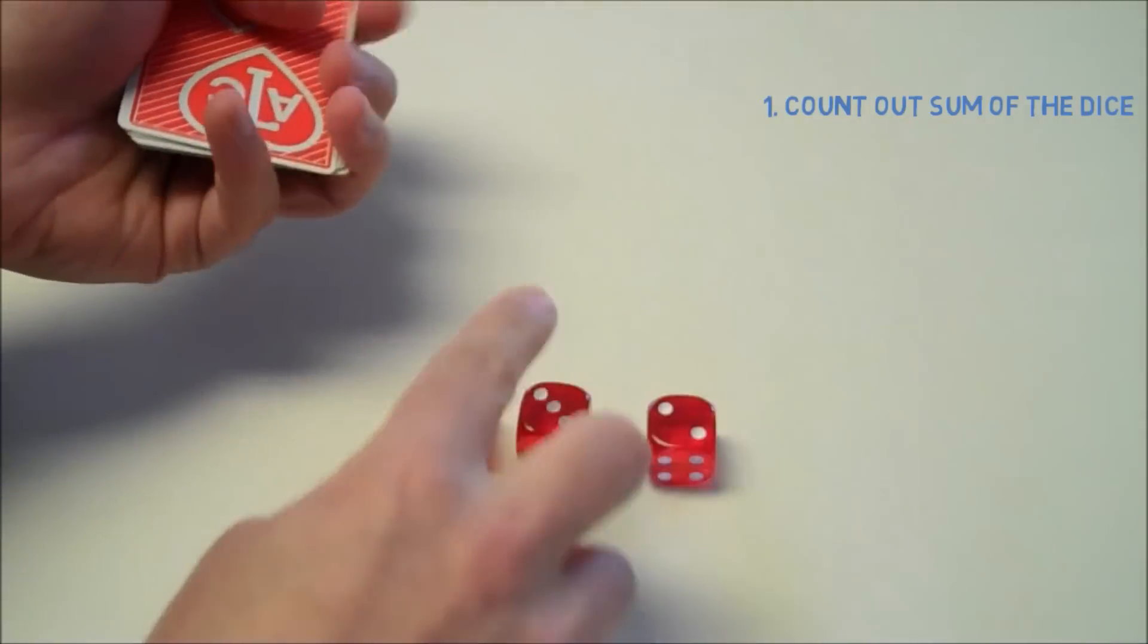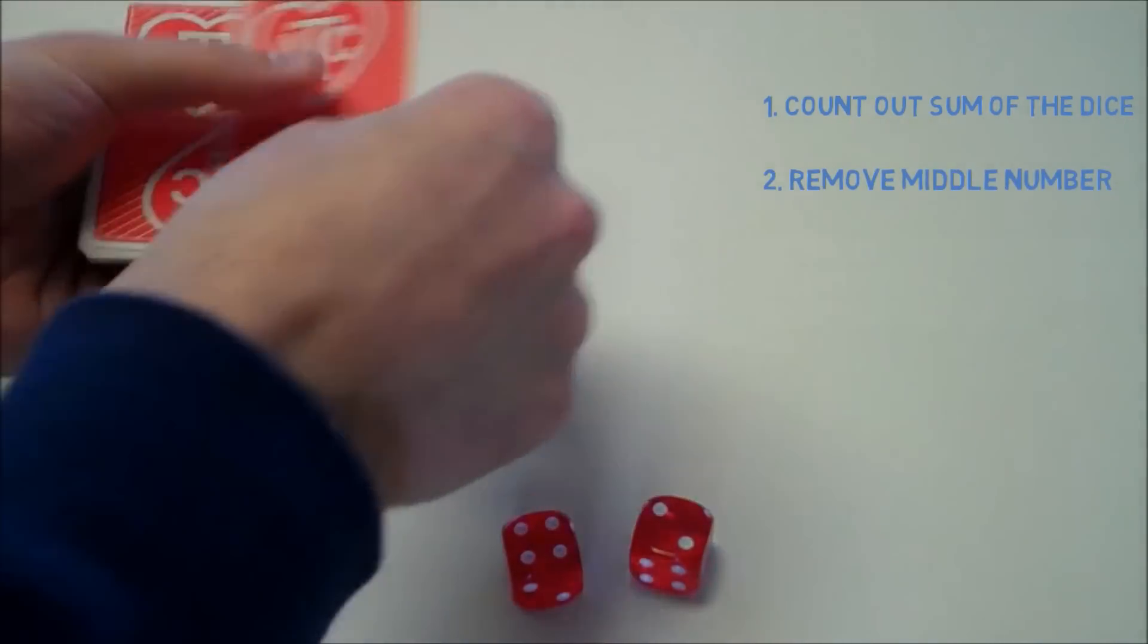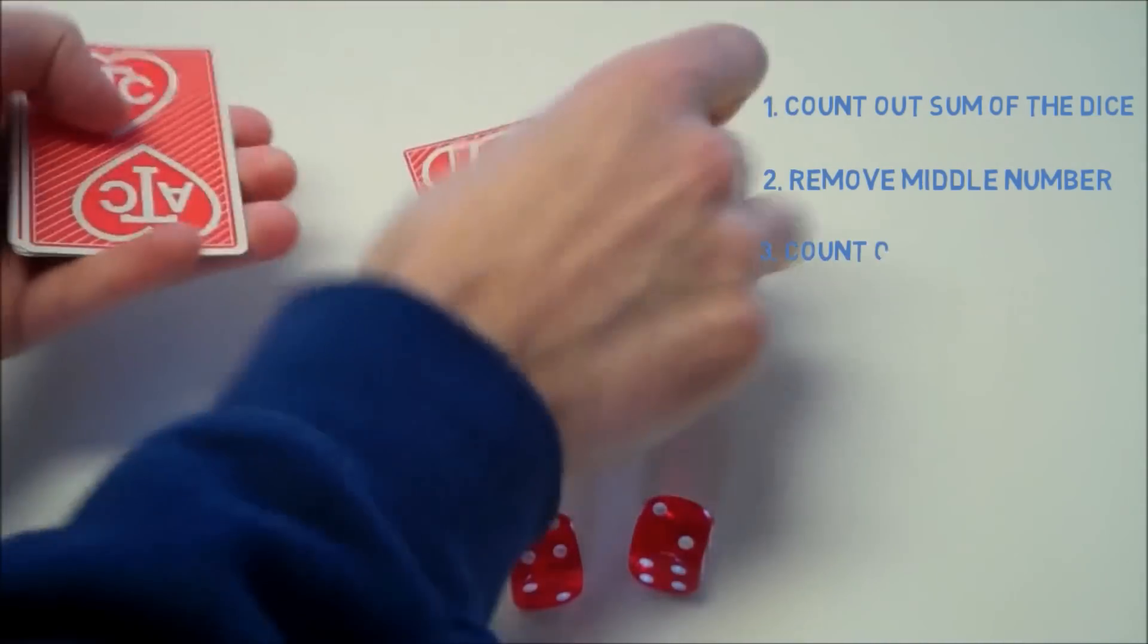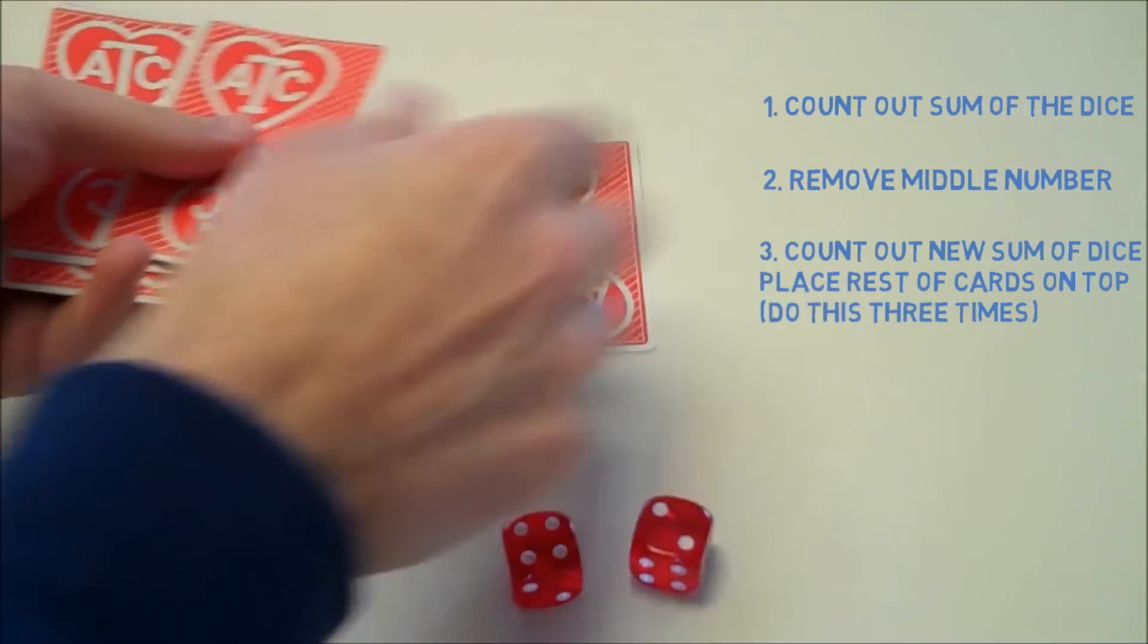Then what we're going to do is remove the middle number of three. And the remaining dice add up to six. So we count out six cards, put the remaining cards on top of it.